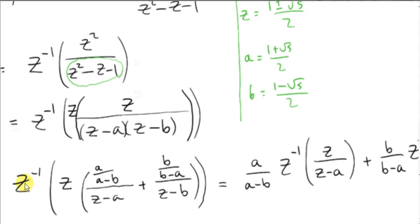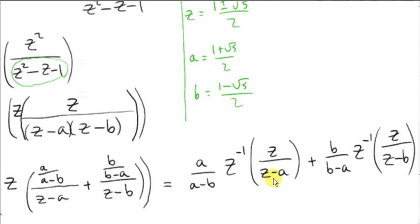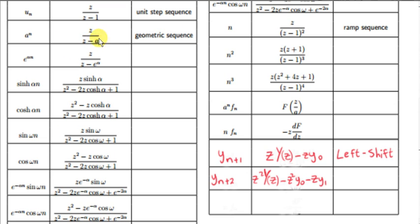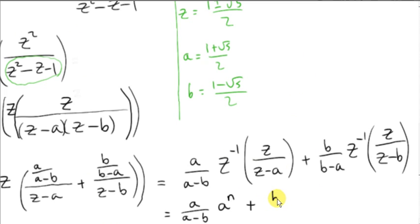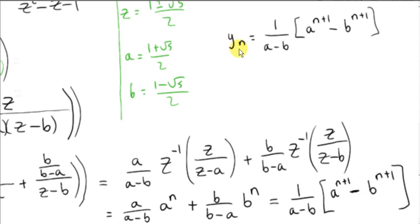Now we apply the linearity property of the inverse z-transform. a over a minus b is just a constant — we pull that out and multiply it by the inverse transform of z over z minus a. We do the same with b over b minus a and get the inverse transform of z over z minus b. The inverse transform of z over z minus a is the geometric sequence a to the power of n. Lastly, we factorize out 1 over a minus b: a times a to the n gives a to the n plus 1, and the b over b minus a term introduces a minus sign since b minus a equals minus(a minus b), giving us the closed-form expression for the Fibonacci sequence after plugging in for a and b.